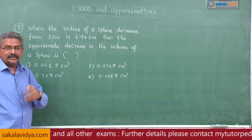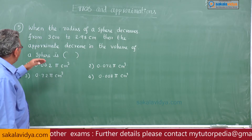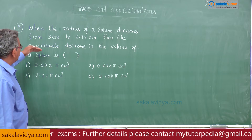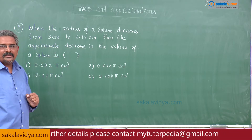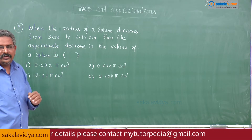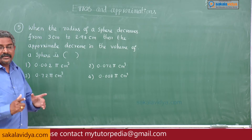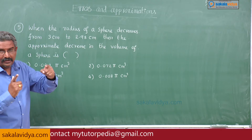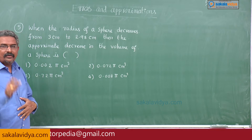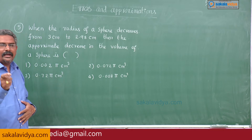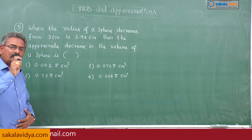What we have to find out here? We have to find out the approximate decrease in the volume. That means delta v we have to calculate — not the percentage error in volume, but the error in v, delta v.